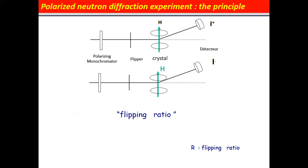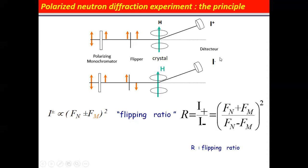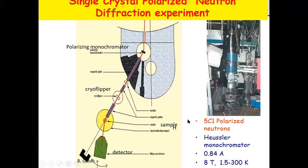Here is what the experiment looks like: the neutrons arrive, they are polarized, flipped either up or down, and you count in the detectors i+ or i−, measuring what we call the flipping ratio: (FN + FM)² divided by (FN − FM)². This is our data to map the spin density. Here is one of the instruments at the LLB in France — you can see the neutrons coming in, the polarizing monochromator, the cryoflipper, the sample, and the detector.